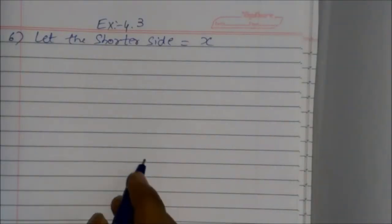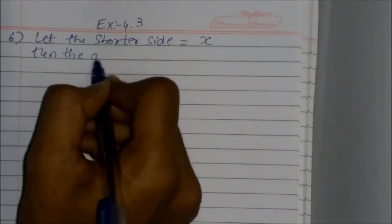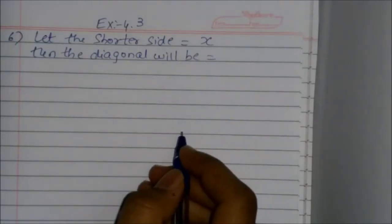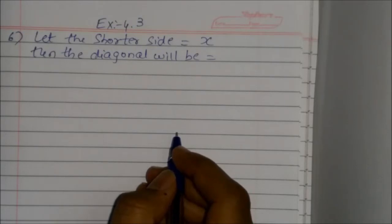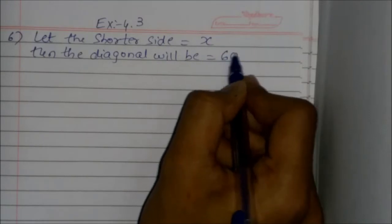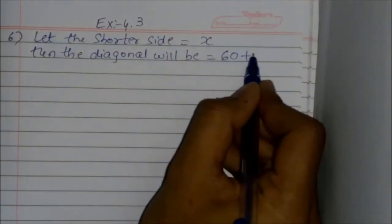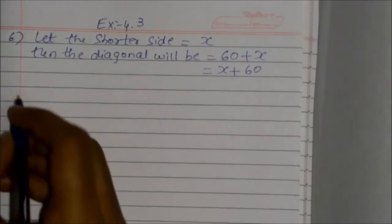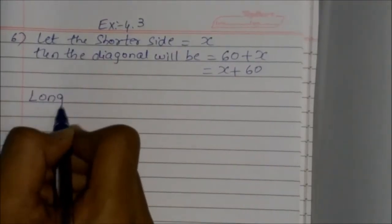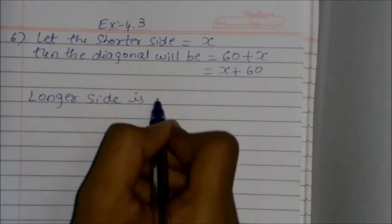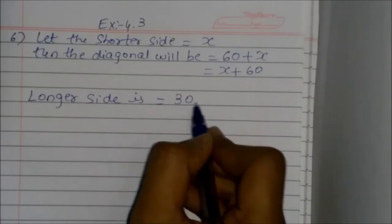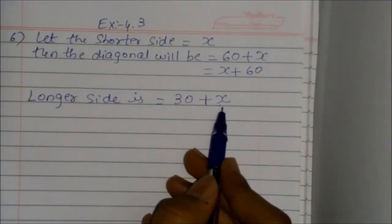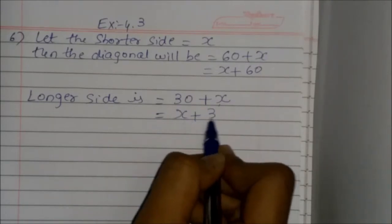Let the shorter side be equal to x. Then the diagonal will be equal to — the diagonal of the rectangular field is 60 meters more than the shorter side — so the diagonal is x plus 60. The longer side is 30 meters more than the shorter side, so the longer side is x plus 30.